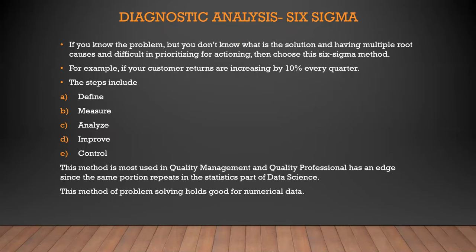Next is diagnostic analysis, or the Six Sigma technique. If you know the problem but not the solution, or you have multiple root causes and don't know which to prioritize, you can choose Six Sigma. This includes the steps: define, measure, analyze, improve, and control (DMAIC). For example, if customer returns are increasing 10% every year — a bigger problem with multiple root causes — you use Six Sigma. This method is mostly used by quality professionals, who also have an advantage when taking data science courses since the statistics overlap.